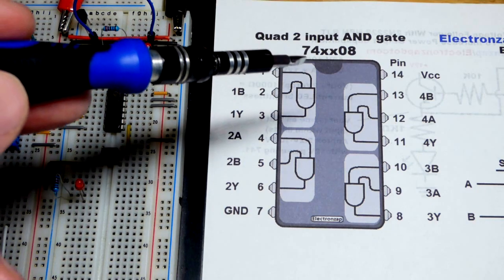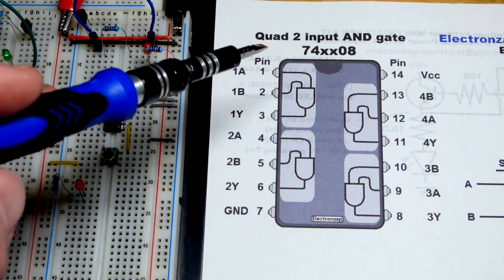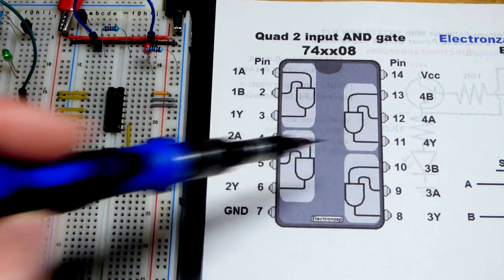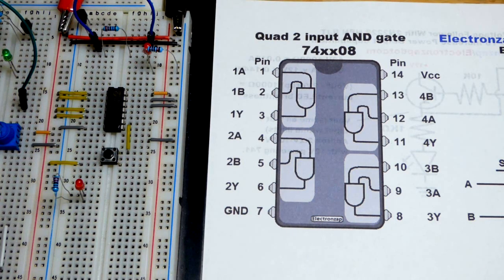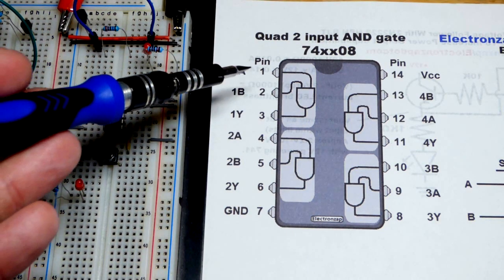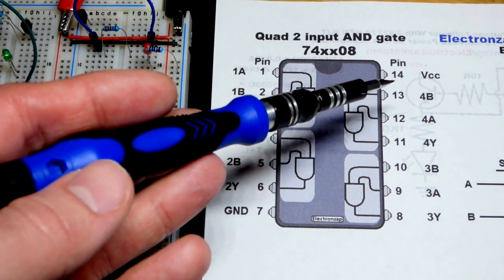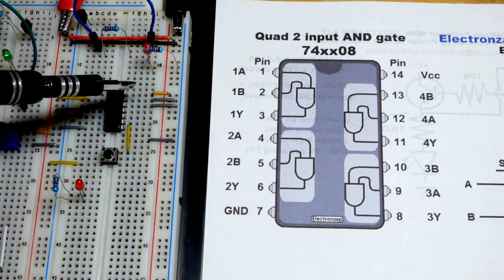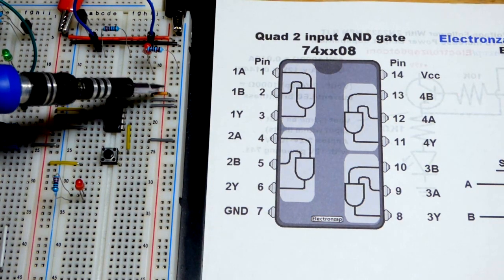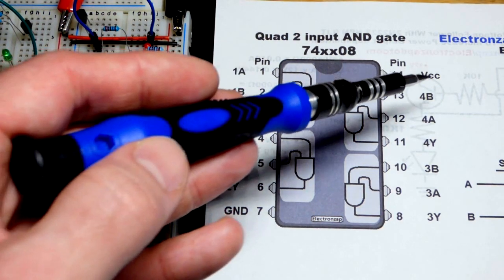So now we have the integrated circuit there, the 74HC08. Quad means that there's four, you can see that there's four of the AND gates on there. Each one of these pins is either an A input, a B input, or an output. Also, we have the power pins.